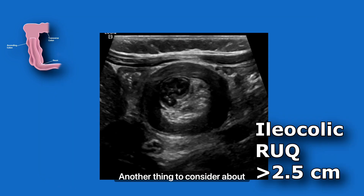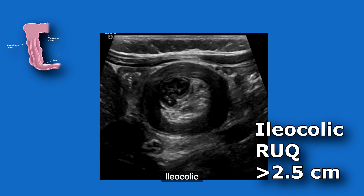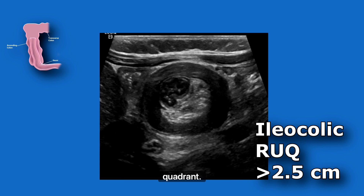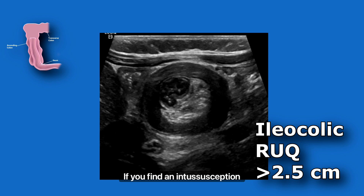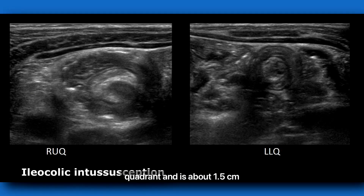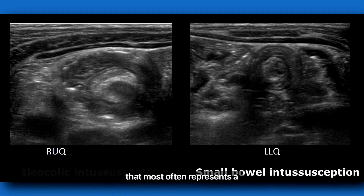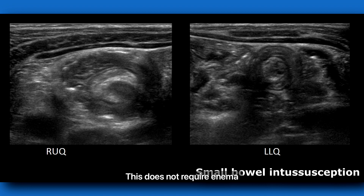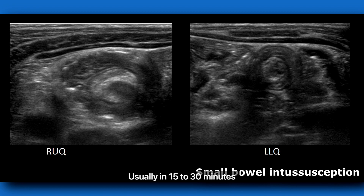Another thing to consider about ileocolic intussusception is size and location. The ileocolic intussusception is usually located within the right upper quadrant, and it's going to be larger than 2.5 centimeters. If you find an intussusception that's in the left lower quadrant and it's about 1.5 centimeters, that most often represents a small bowel intussusception. This does not require enema treatment and goes away by itself, usually in 15 to 30 minutes.